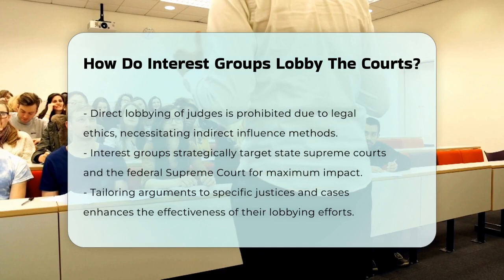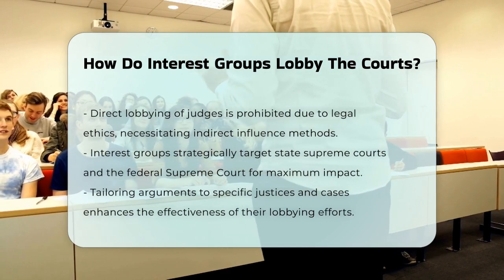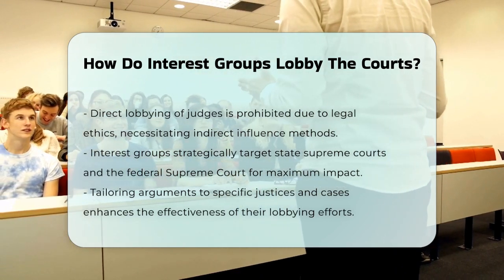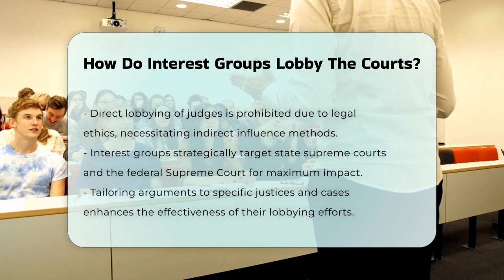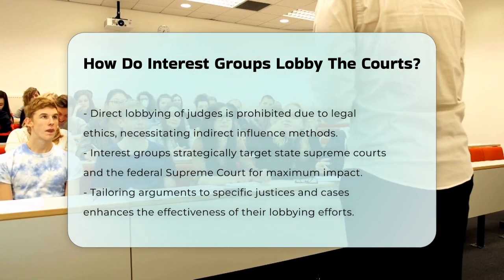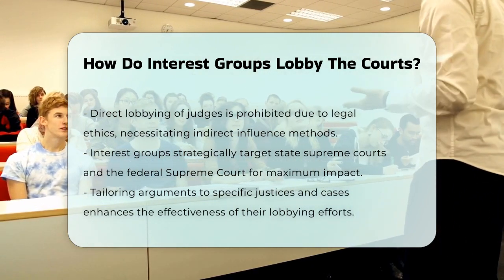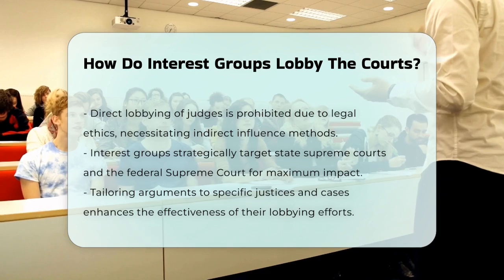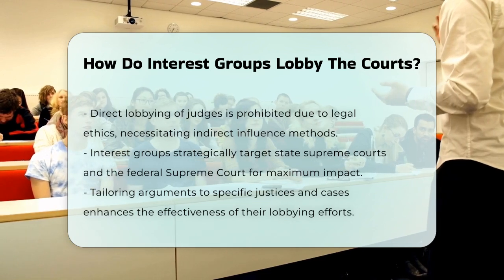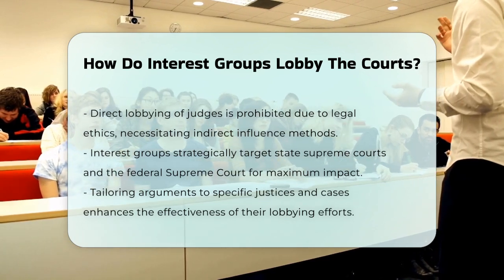In summary, interest groups lobby the courts through amicus briefs, political litigation, supporting test cases, and providing legal resources. These strategies allow them to influence court decisions without directly lobbying judges, ensuring their voices are heard in the judicial process.